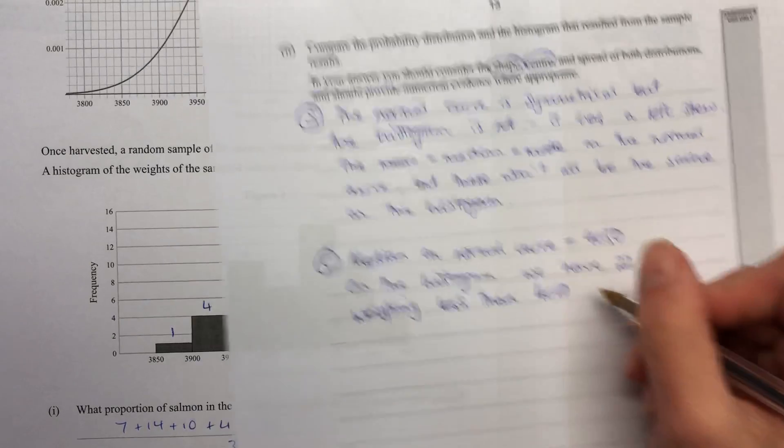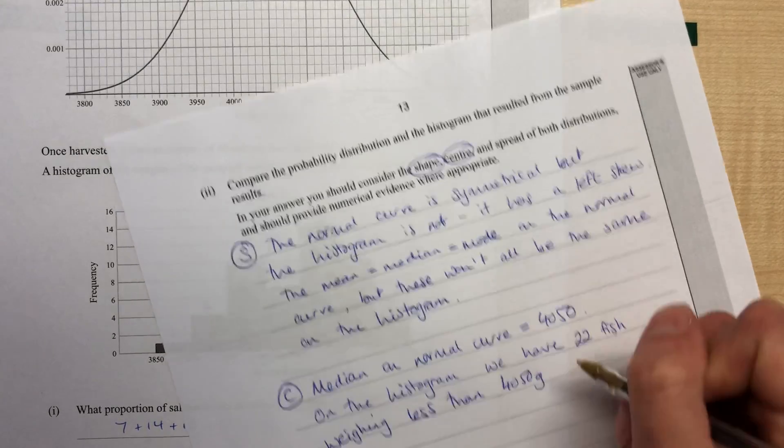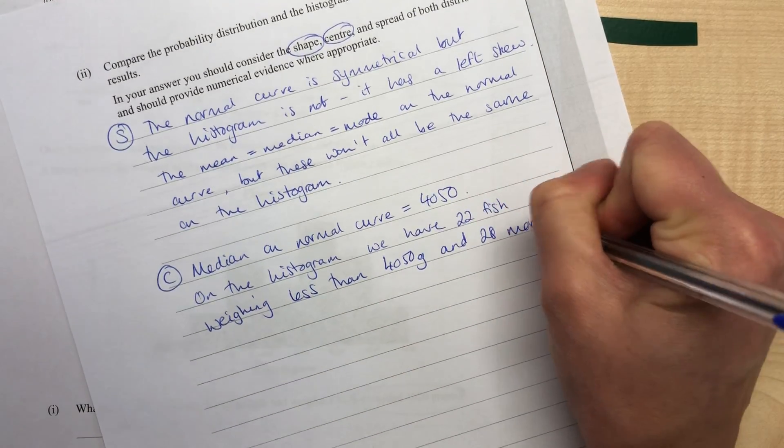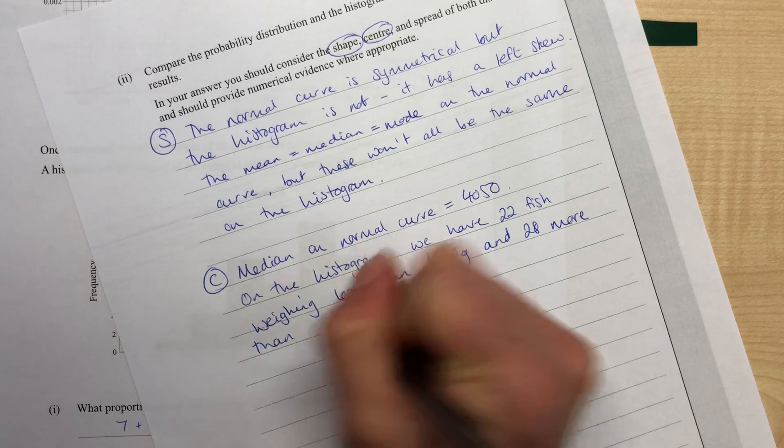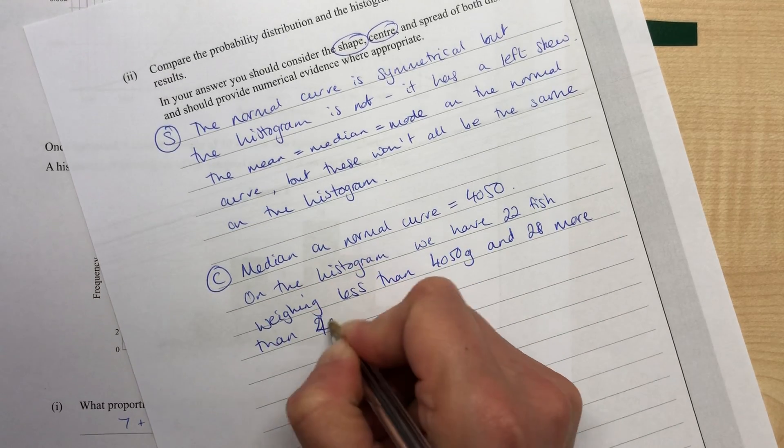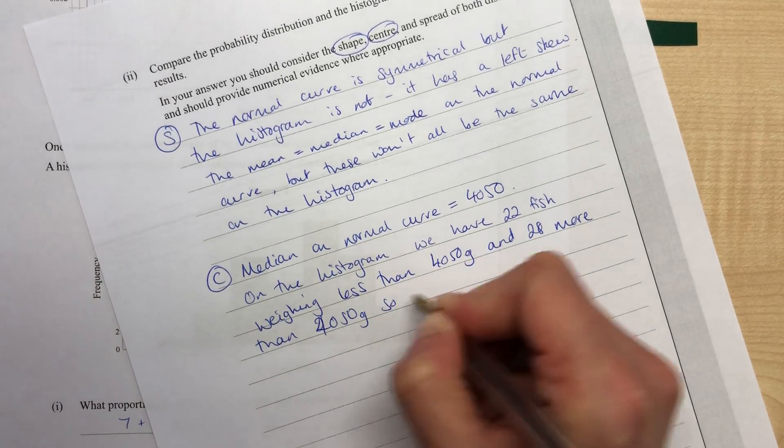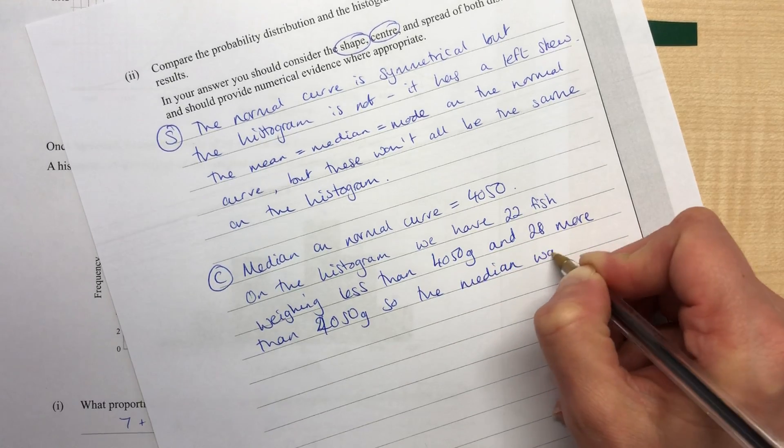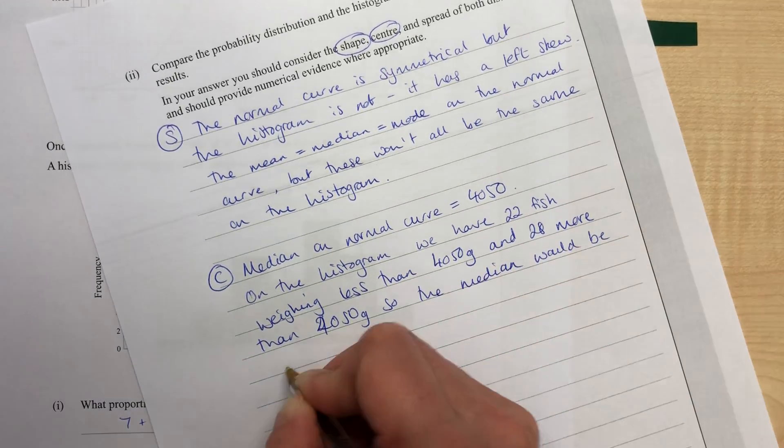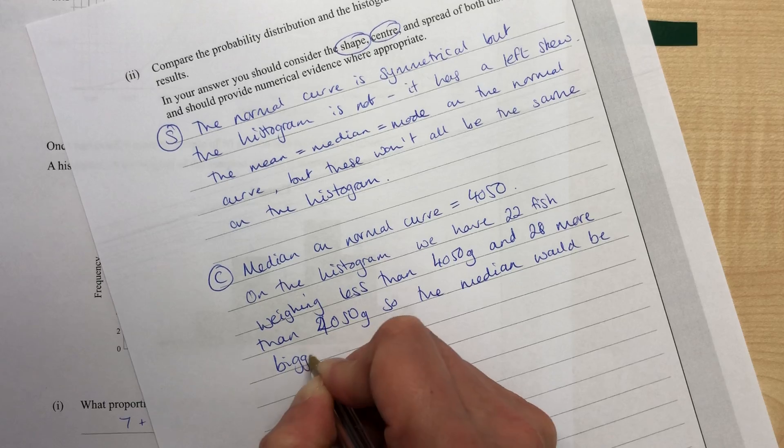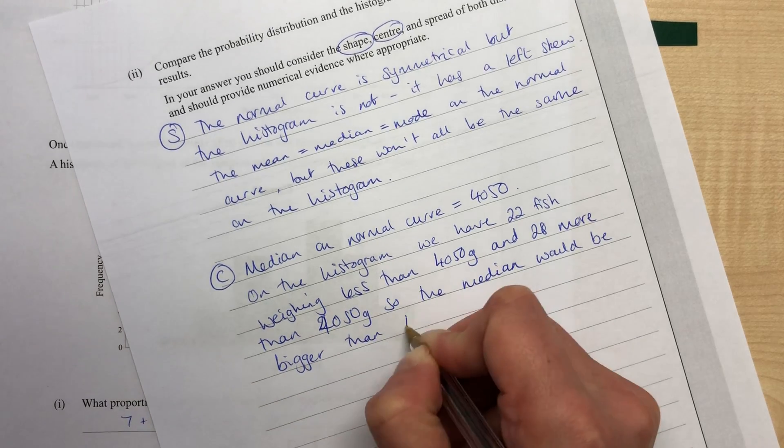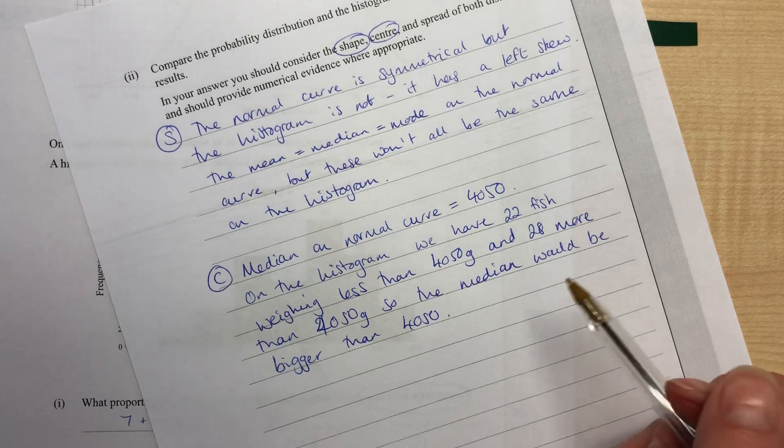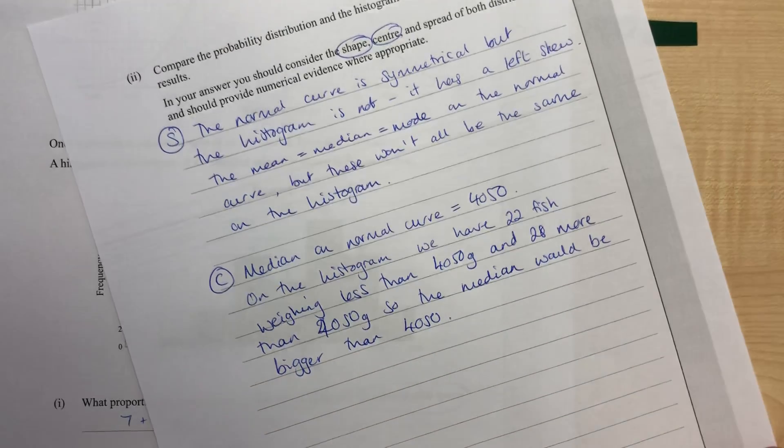Is this grams? Yeah, grams. And 28 more than 4050 grams. So the median would be bigger than 4050, because it's not sitting there exactly in the middle with 25 fish below and 25 fish above it.